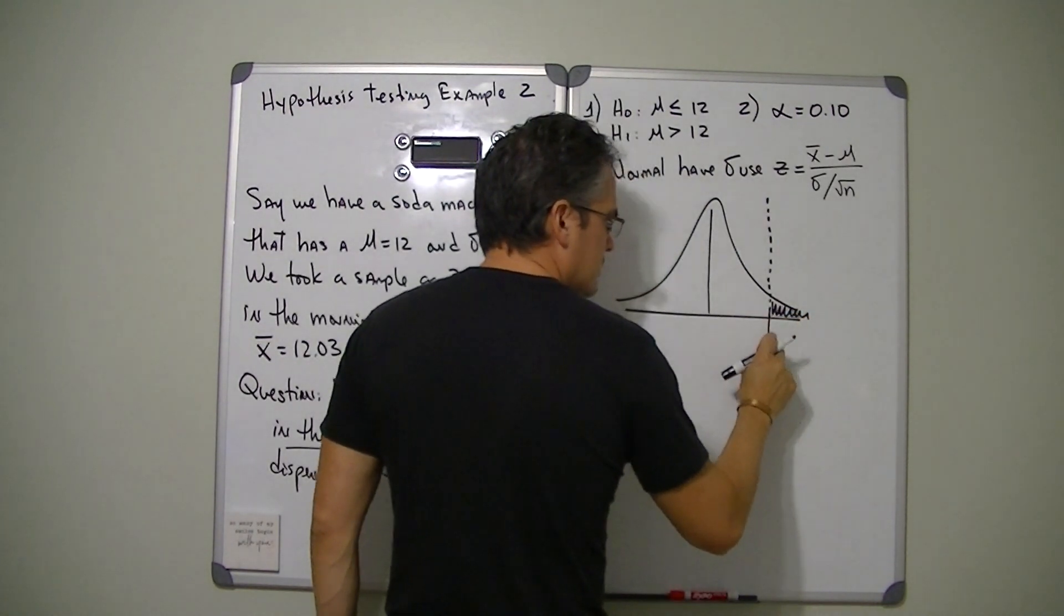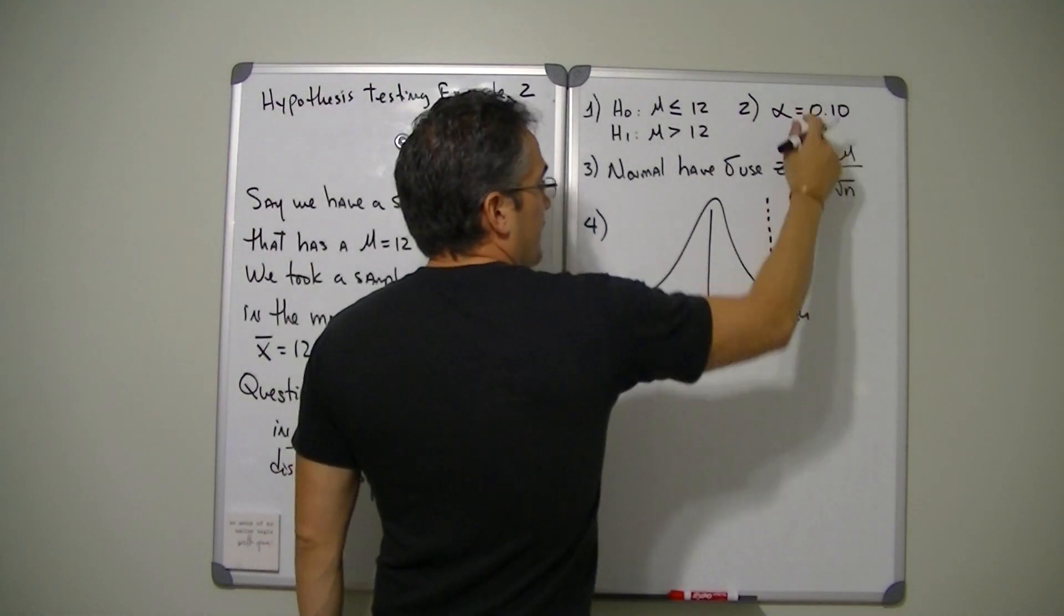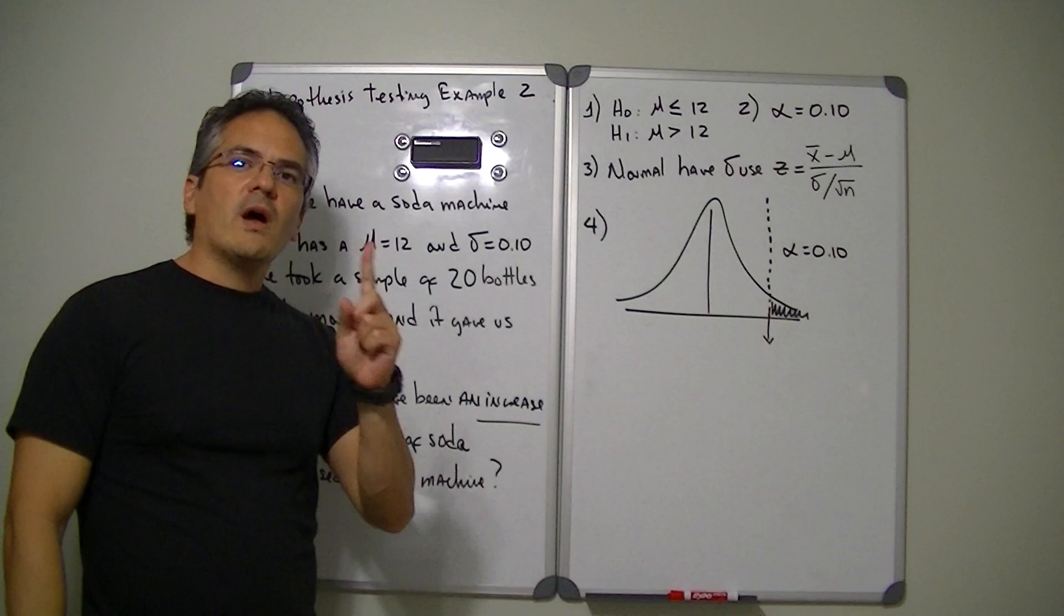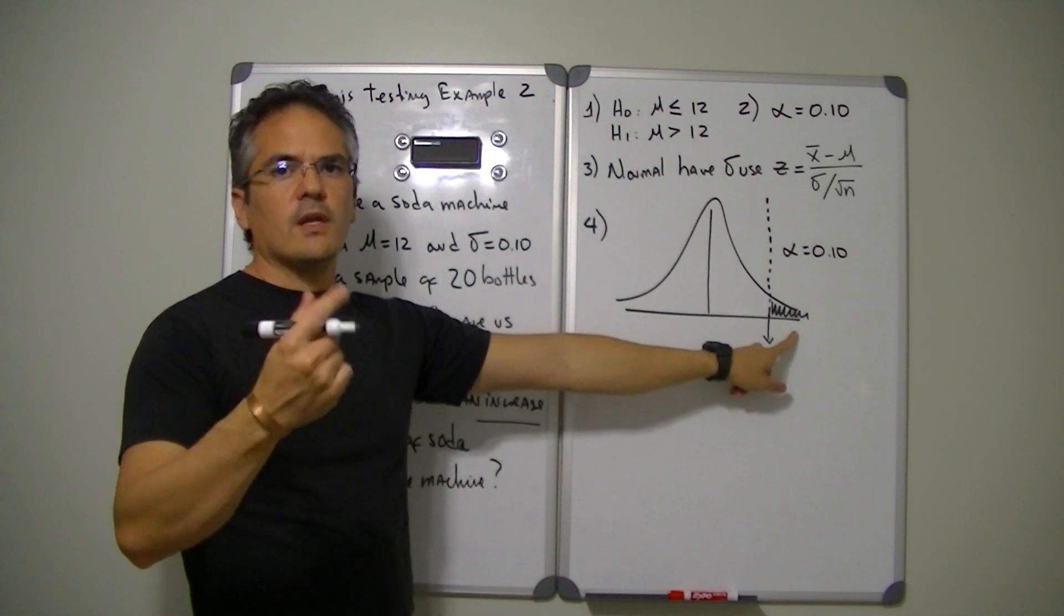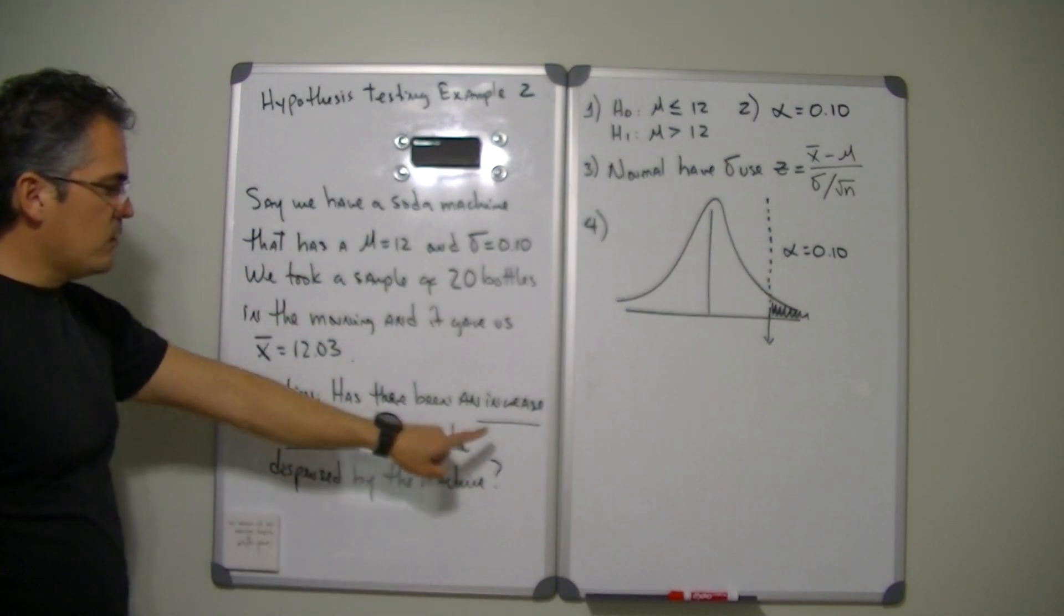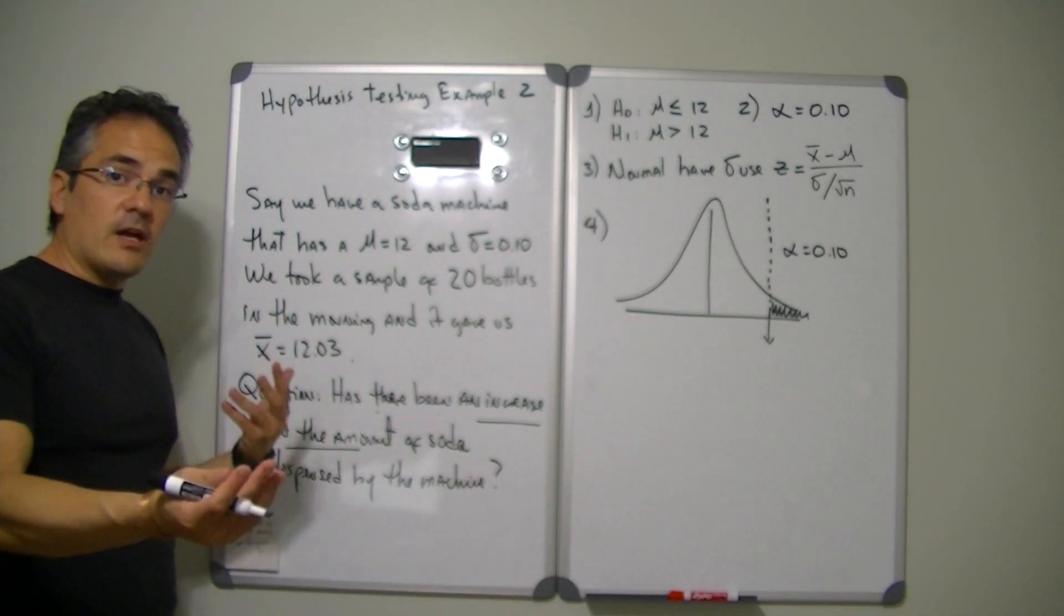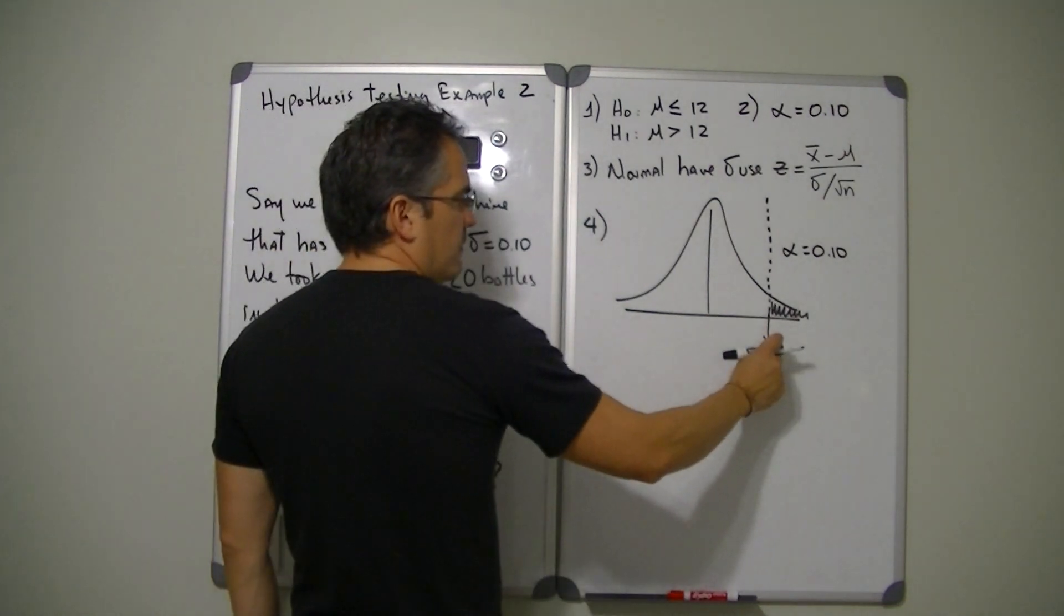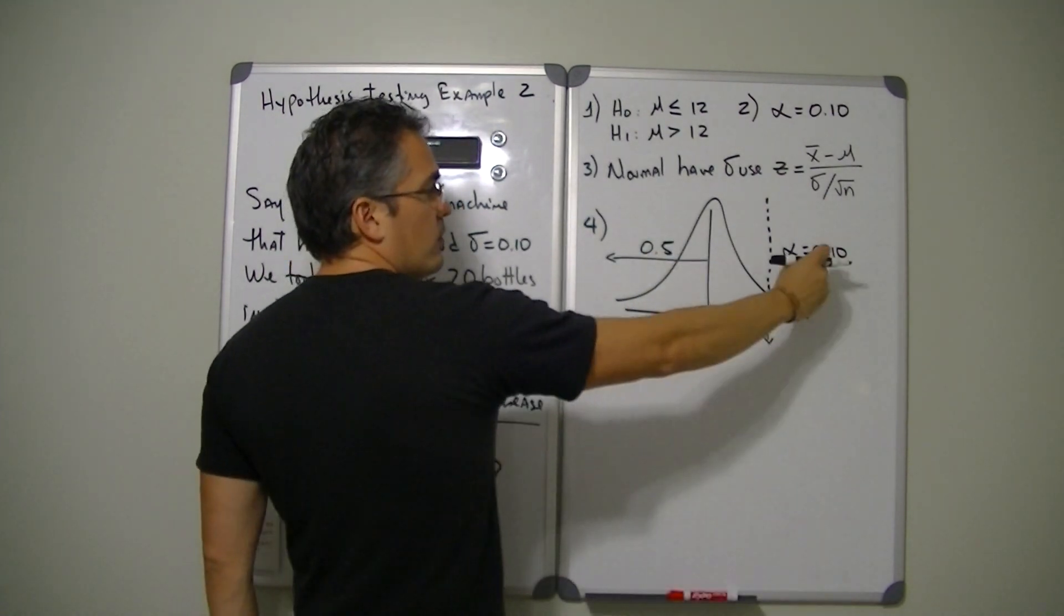So we need to find a critical value to put in there. Now we know that our alpha is going to be 0.1 and notice that this is what we call a one tail test, and it's a one tail because we're putting only one tail in here. The previous one in example one it was a two tail because we put one on this side and one on this side. This is one tail because the question was is there an increase. The previous question was was there a change or is it different, and when it asks you that question you got to do two tails. In this case it's asking you for increase. Now how are we going to find that critical value? Well we know that the probability of being on this side of the curve is 0.5 and we know that we want an alpha of 0.1, so what's missing in here is 0.400.